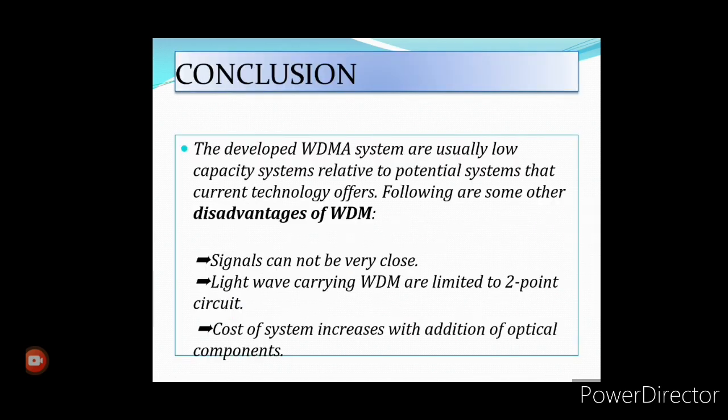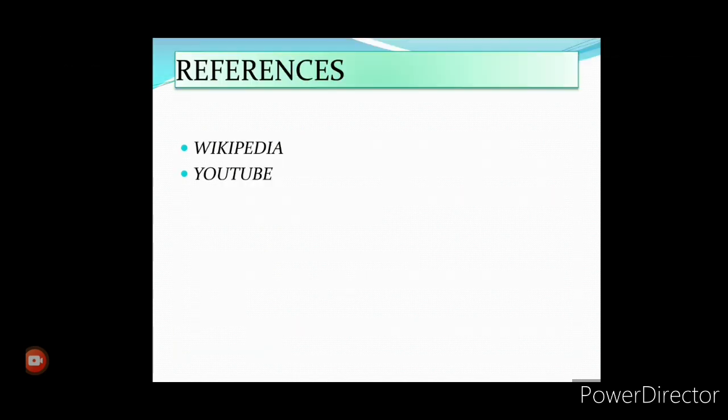We come to the end of our video. To conclude: developed WDM systems are usually low-capacity systems relative to the potential that current technology offers. Some disadvantages of WDM are that signals cannot be very close together, the wavelengths carrying WDM are limited, and the cost of the system increases with the addition of optical components. This was all about WDMA, and I hope you liked the video. Thank you.